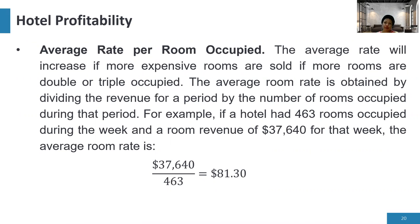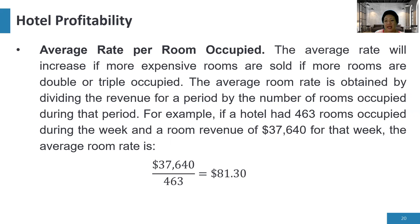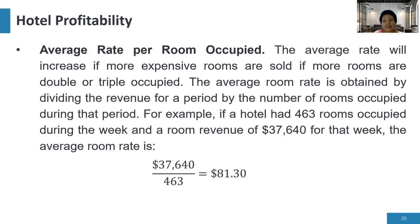Next is the average rate per room occupied. The average room rate increases if more expensive rooms are sold or if more rooms are double or triple occupied. It is obtained by dividing the revenue for a period by the number of rooms occupied during that period. For example, 463 rooms occupied with revenue of $37,640 gives an average rate of $37,640 ÷ 463 = $81.30 per room.